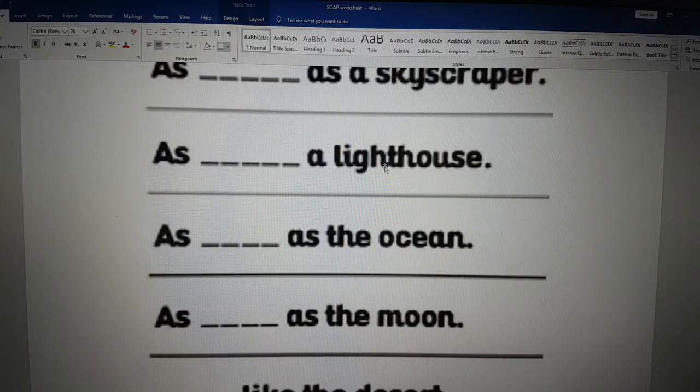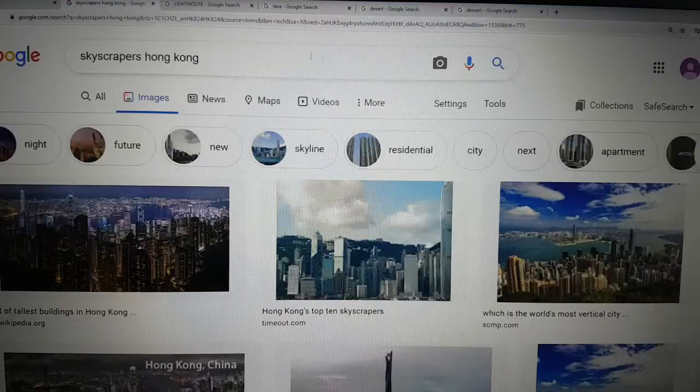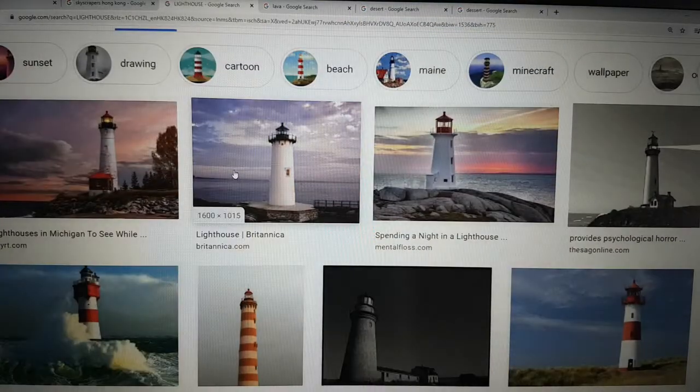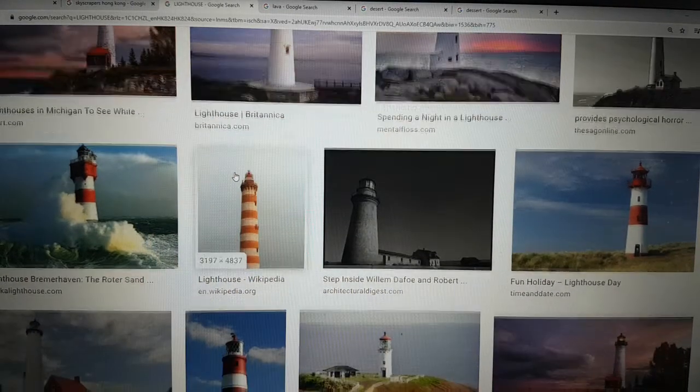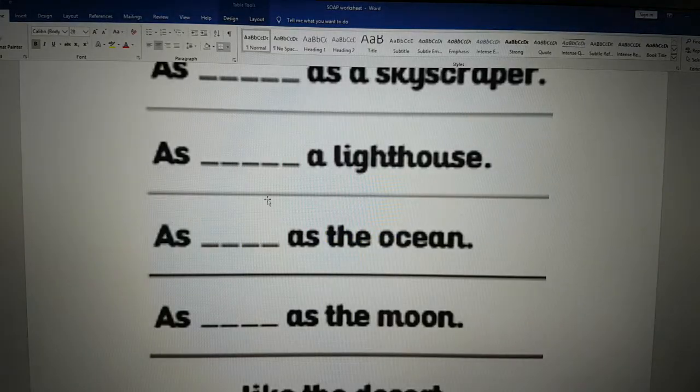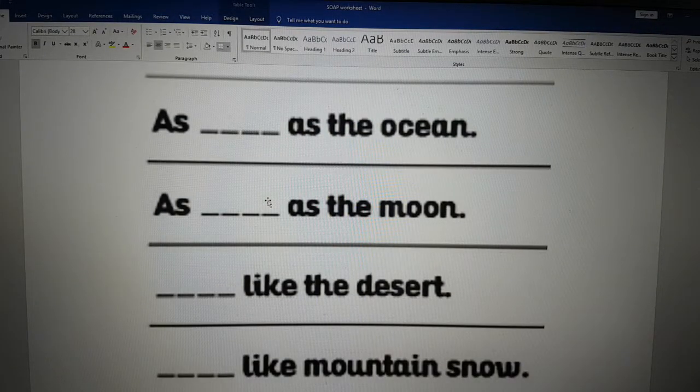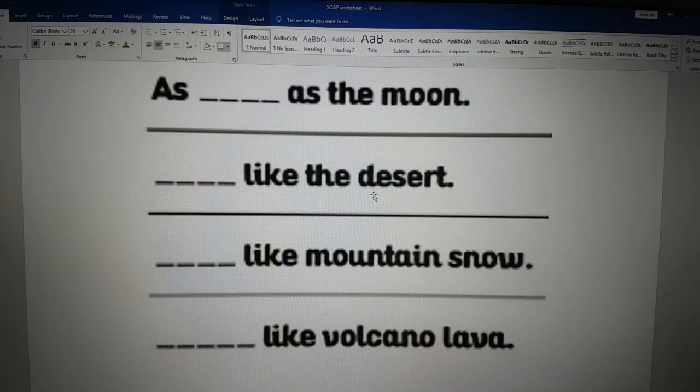As what as a lighthouse? In case you don't know what is a lighthouse, let's have a look. This is a lighthouse. It is a very tall building with a light at the top for sailors. As something as the ocean. As what as the moon? Something like the desert.